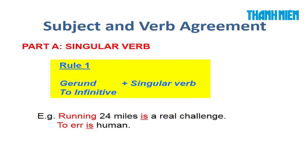Luật thứ nhất: Nếu như chủ ngữ là gerund (verb + -ing) hoặc to infinitive làm chủ ngữ, thì động từ bắt buộc là số ít. Ví dụ: 'Running 24 miles is a real challenge' — mình chia theo chữ 'running', không phải 'miles'. 'To err is human' — chủ ngữ là to infinitive 'to err', động từ sẽ là singular.